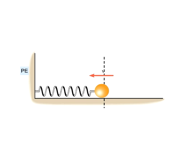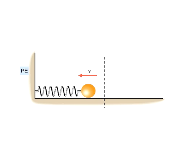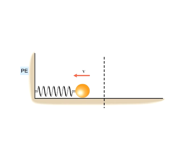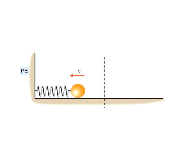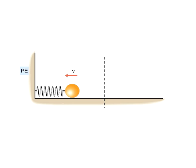However, the momentum of the ball will cause it to continue on its way, causing the spring to compress. This will cause the amount of elastic potential energy to increase at the cost of the ball's kinetic energy. The ball starts to slow down. This exchange of kinetic energy for elastic potential energy continues until all of the ball's kinetic energy is converted to elastic potential energy and the ball momentarily stops.